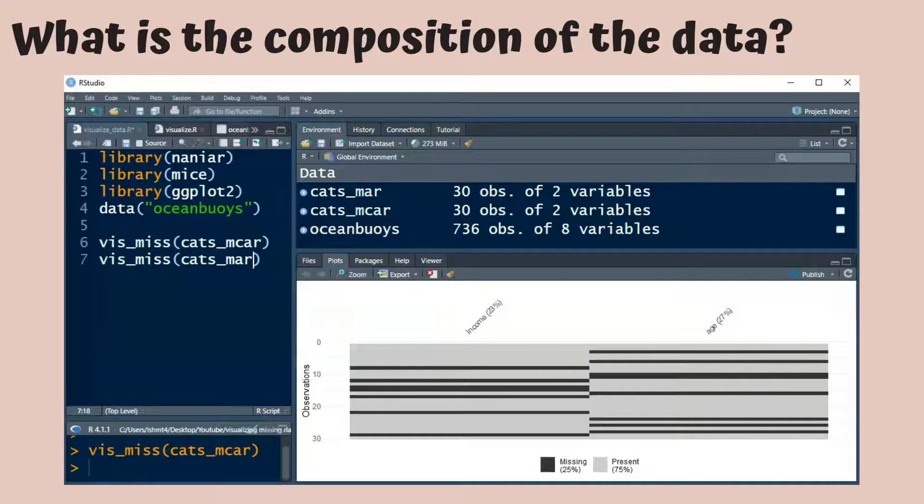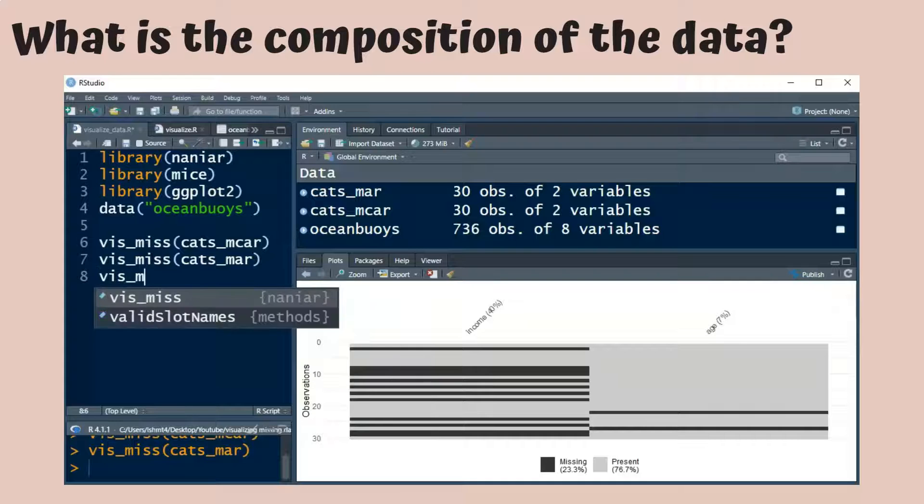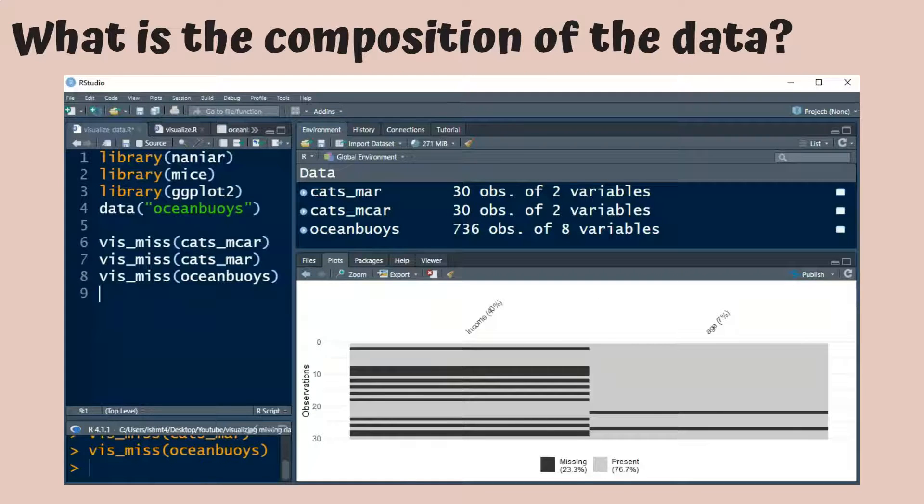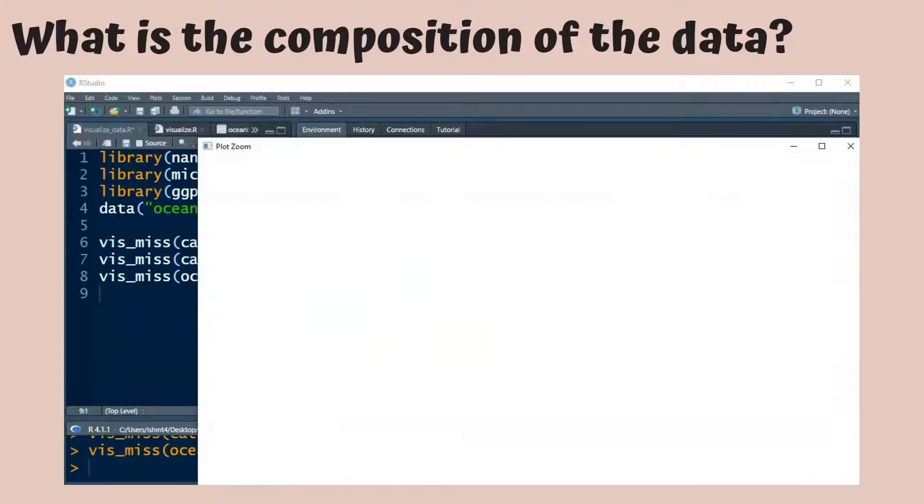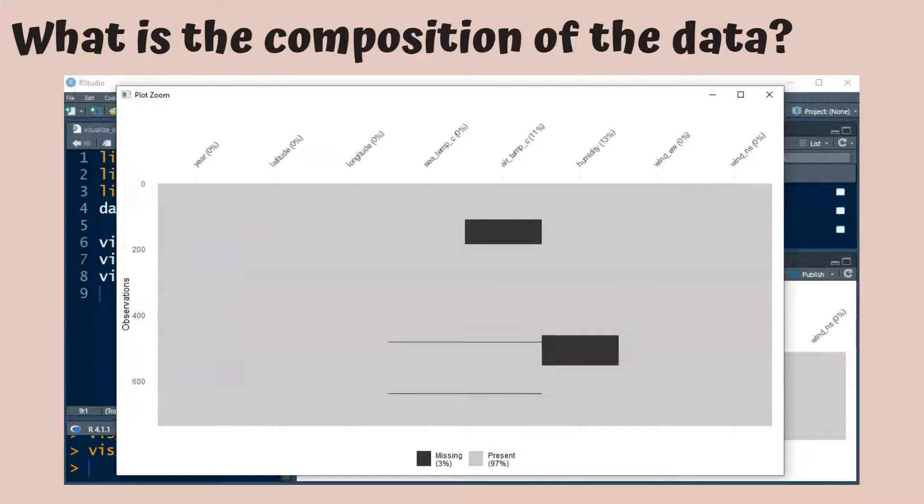Now, let's have a look at the cats MCAR plot. As you can see, it's mostly the income variable that is missing here. And we can do the same for the ocean buoys data set. Here, after we zoom in a little bit, we'll see that there are three variables that are missing in this data set. And in particular, there seems to be two big blocks of observations, one for air temperature and the other for humidity that's missing.